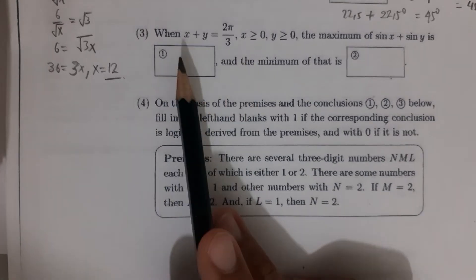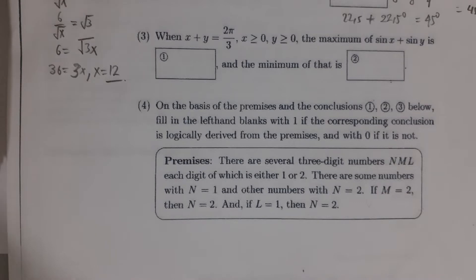When x + y = 2π/3, and x > 0, y > 0, the maximum of sin x + sin y is what, and the minimum of that is what?